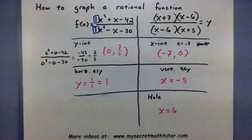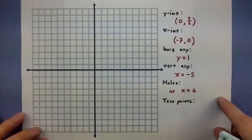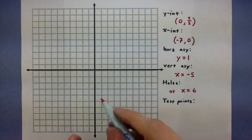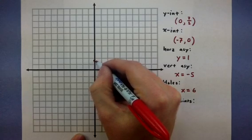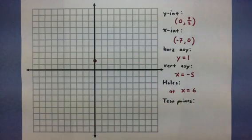So, let's go ahead and gather all of this up and see if we can actually see what the graph looks like. All right. So, first, I'm going to start plotting out all of my intercepts. So, it looks like I have one at 0 and 7 fifths. So, x is 0, y is 7 fifths. Looks like it's somewhere around there. So, I know that that is one place that my graph must go through.